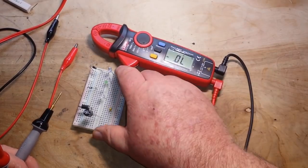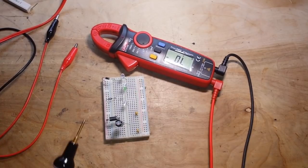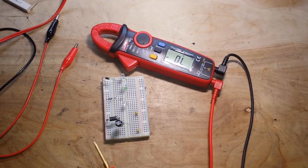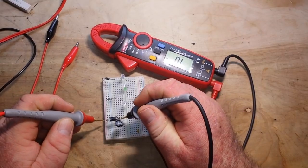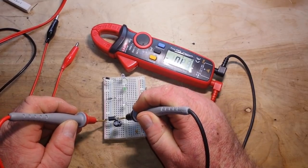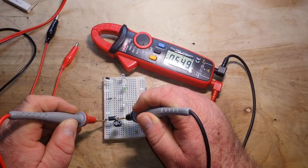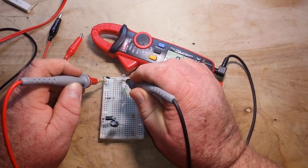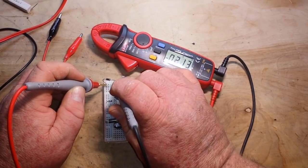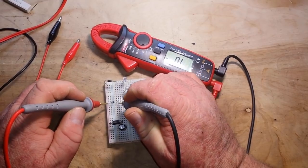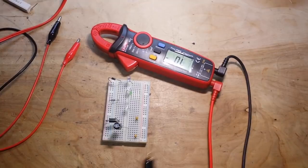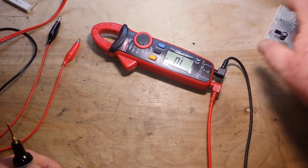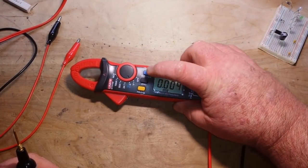There we go. I want to check the drop on these. So first we'll start with a standard silicon power diode. Yeah, 0.5. And then a Schottky, which should be what, 0.2? Yep. And this is one of those ultra-fast diodes, should read about the same as a standard, 0.5. So all very nice there.